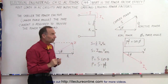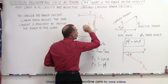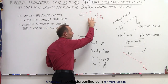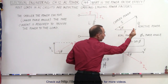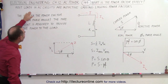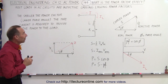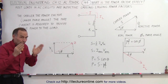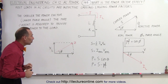Here's where the problem comes in. The greater the complex power, the greater the current requirement to the load. Even though the inductor doesn't actually consume power, it requires more current if there's a bigger phase angle, therefore a smaller power factor. Most loads in AC circuits are inductive in nature, therefore causing lagging power factors. The smaller the power factor — meaning the larger the phase angle — the more current is required to provide the power to the load.